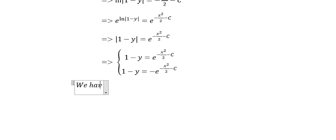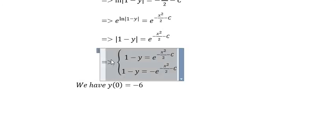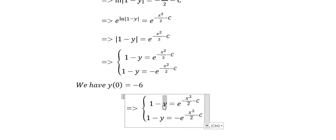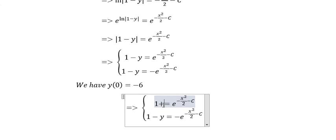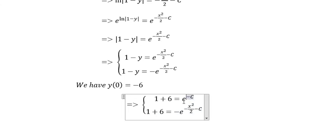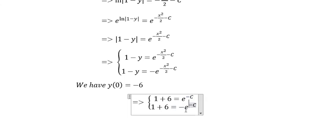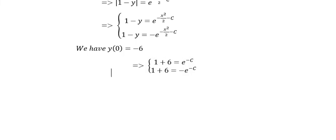We have y(0) = -6. So we put -6 for y and 0 here because we want to find the capital C. This is number 7. This is about -7.